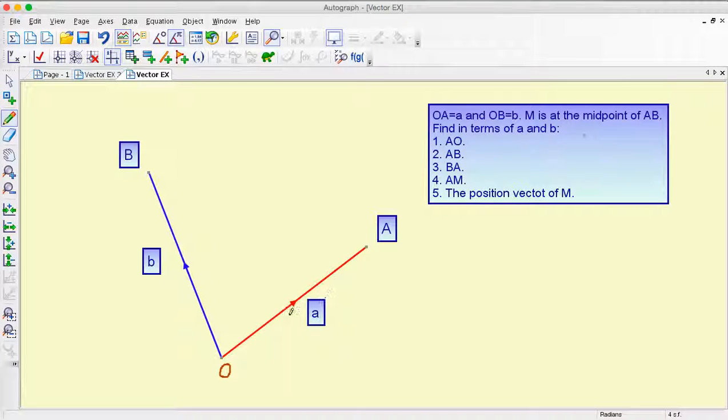So O to A is vector a, O to B is vector b, and M is halfway along this vector AB. Find in terms of a and b, so these are the vectors a and b, A to O.